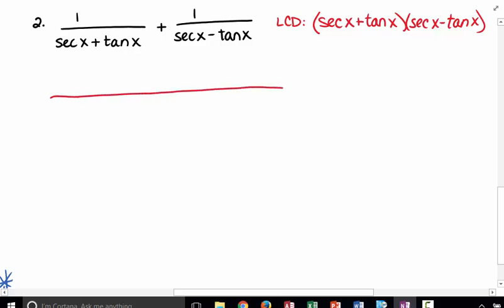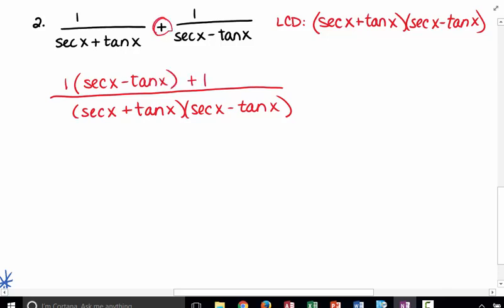So I'm going to write this all over my common denominator. And in the first fraction here, I'm going to have to multiply its numerator by the secant x minus tangent x. And the second fraction, and be cautious of the sign in between, because that sometimes will get students if it's a minus, I will have to multiply by the binomial secant x plus tangent x.